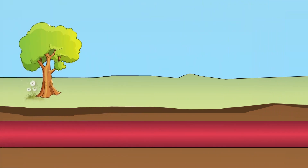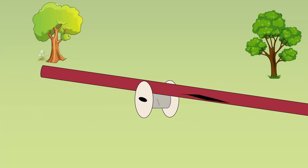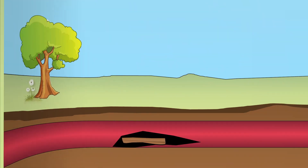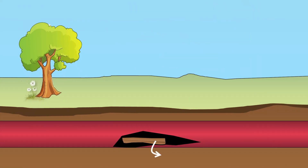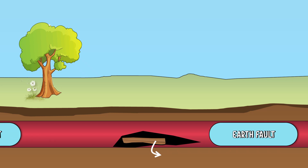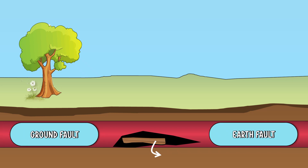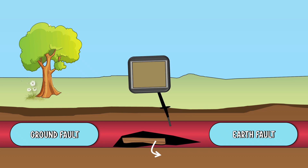Now let's concentrate on earth faults. If the outer layer of the cable is torn during the pulling of the cable or due to any other reason, the conductor of the cable comes in contact with earth — this is called an earth fault or ground fault. To identify this fault, one terminal of the Megger is connected to the conductor and the other terminal is connected to earth. The faulty conductor will give zero resistance.